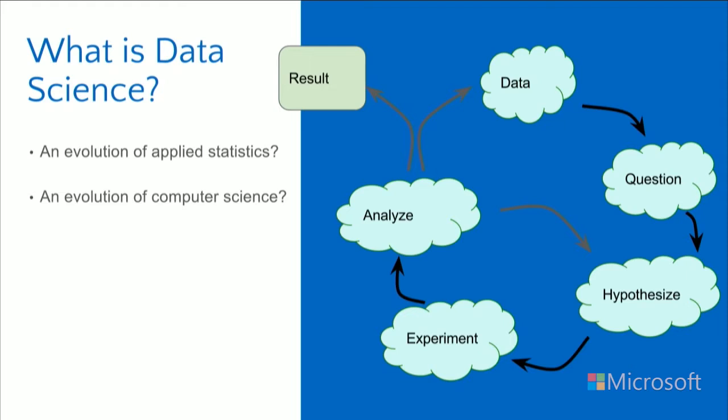That split in what a data scientist is generates some of the nebulousness around the question of what a data scientist is. It's both pieces that have been merged into one thing. Data science started off potentially as an evolution of applied statistics, but you can also think of it as an evolution of computer science.